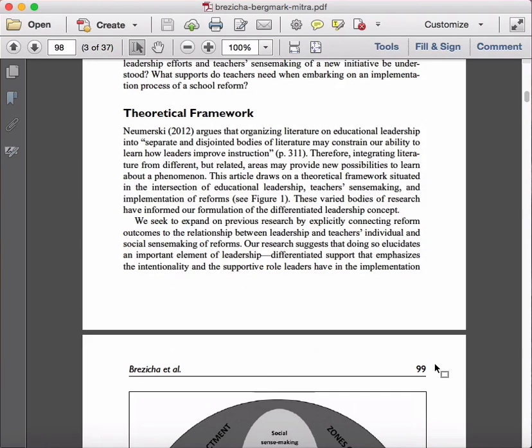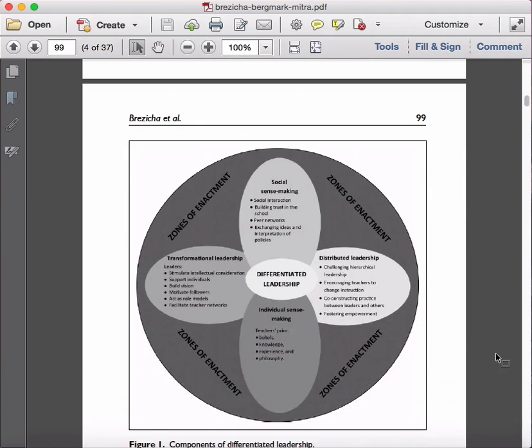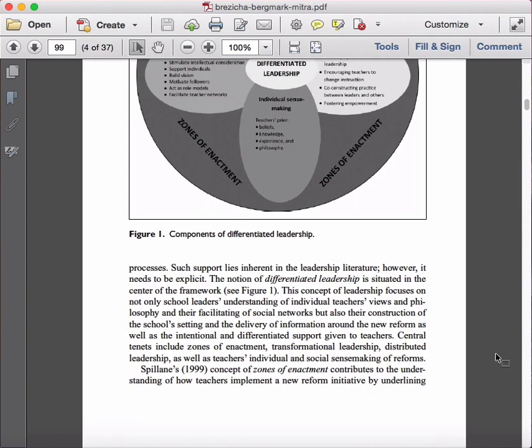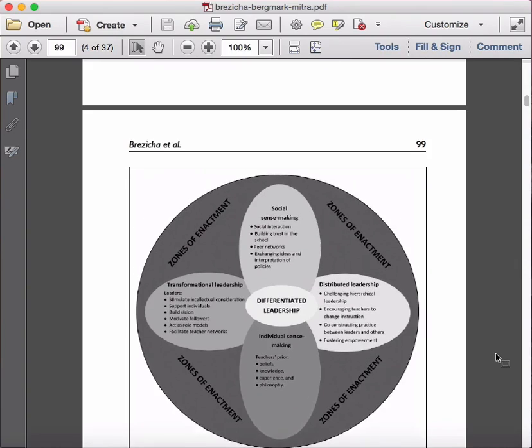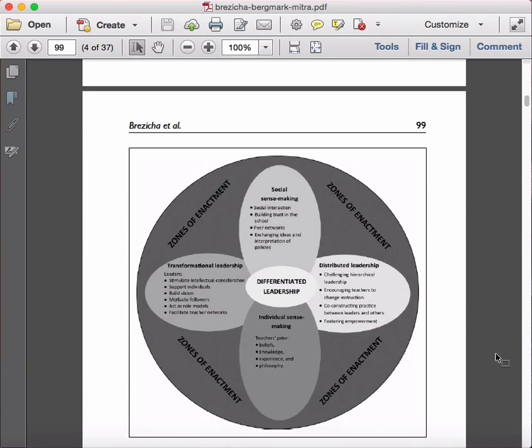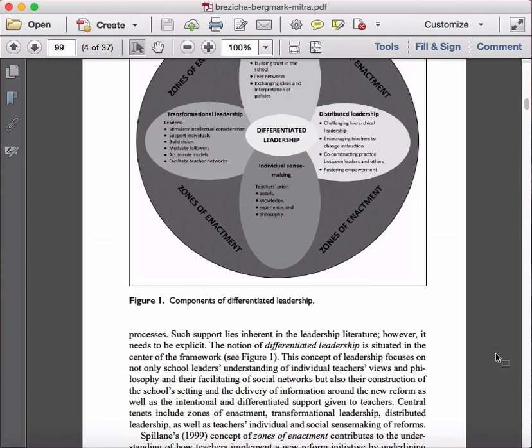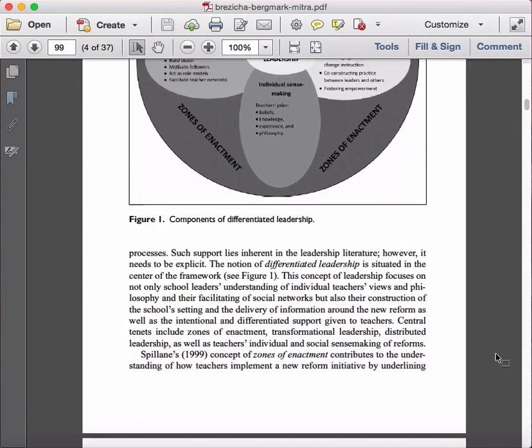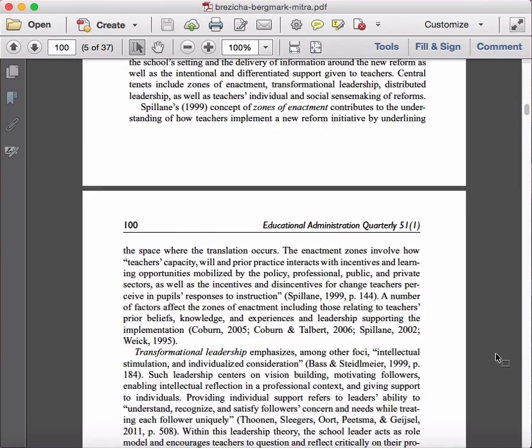instead of having a literature review, you'll notice that they have a theoretical framework. Now it's not uncommon for authors to, instead of having a literature review, to have a conceptual or theoretical framework. Essentially what they're looking at here is they are using this particular framework that they are describing in great detail as a way of situating and essentially analyzing the study that they're doing. So they are basically going through and there is this idea of differentiated leadership, as you can see here. And they're using different conceptual and theoretical ideas to essentially develop this notion of differentiated leadership and how it looks and how it works. And this is essentially the lens in which they are conducting their study.